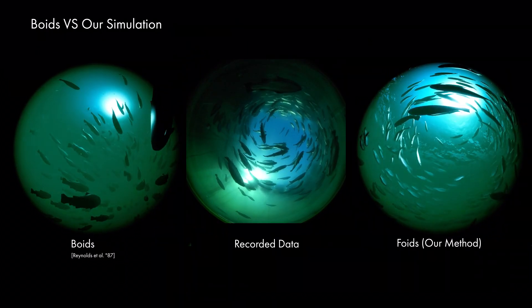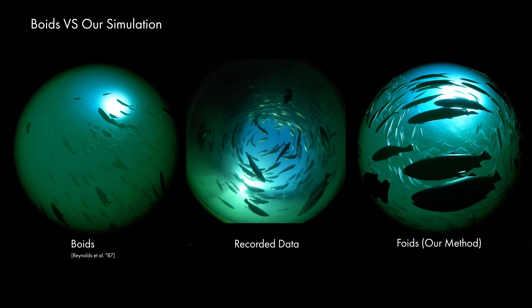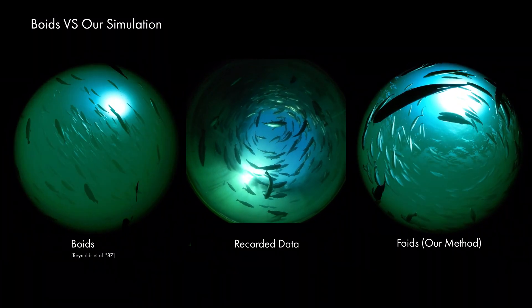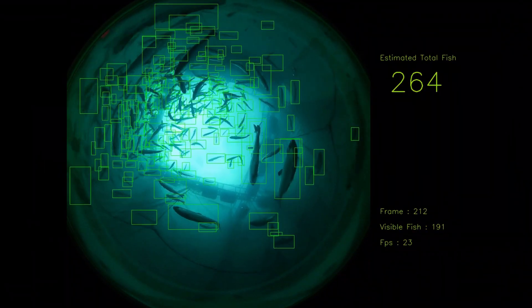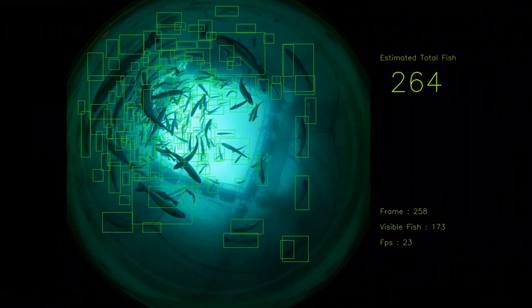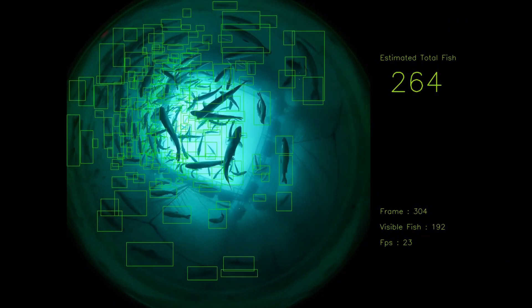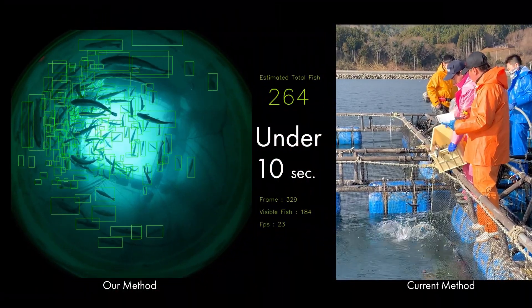By using the FOIDS algorithm, we were able to achieve a realistic simulation of a school of fish in a caged environment. We used our trained computer vision model to detect and count fish in a video taken from the bottom of a fish cage. With our proposed method, a fish count can be calculated without handling the fish within 10 seconds.